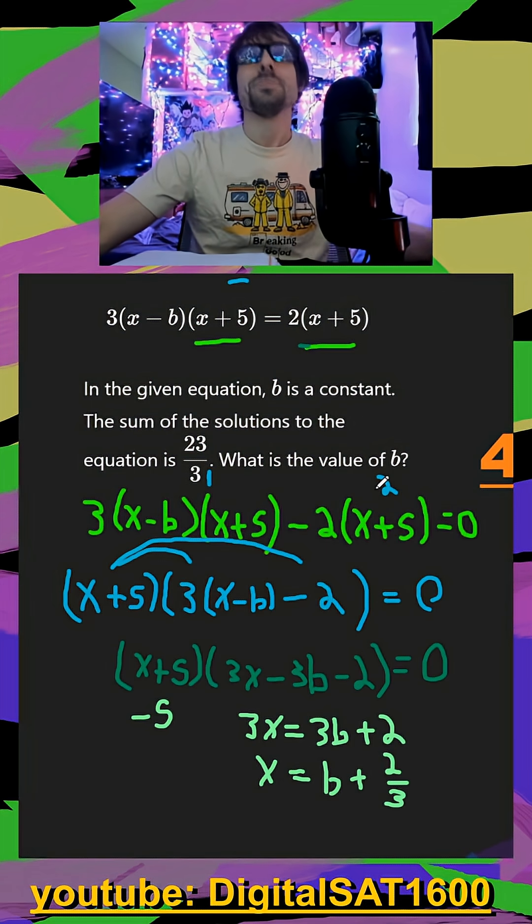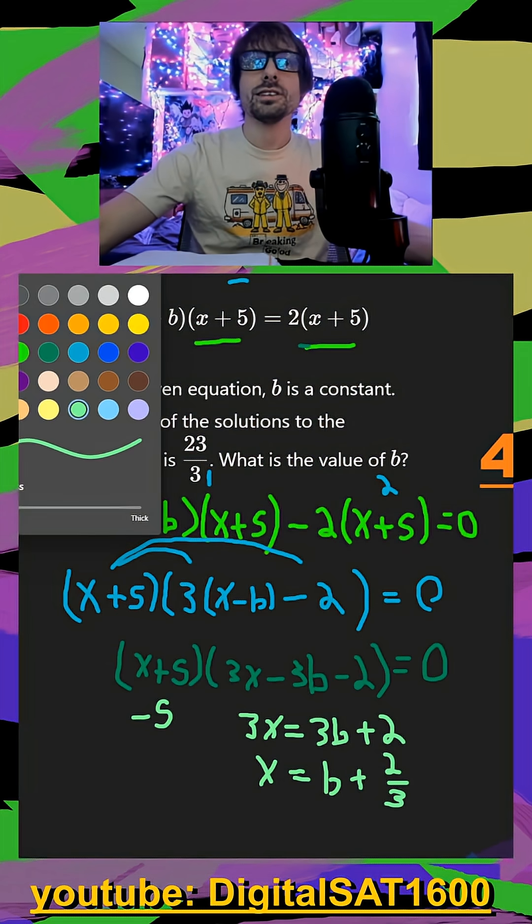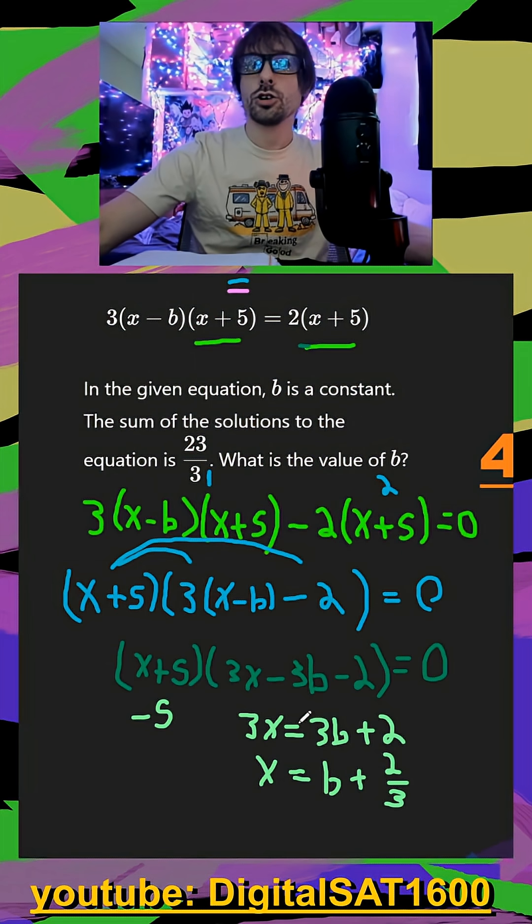Now finally, back to the problem, they wanted the sum of our solutions. So that was the whole point of this, we got our two solutions right here, negative five and this.